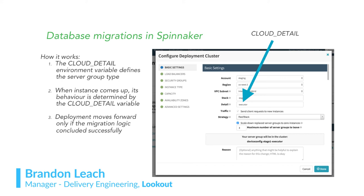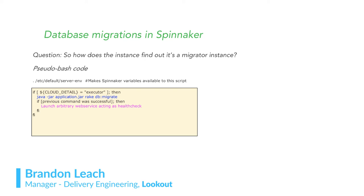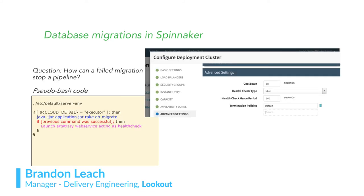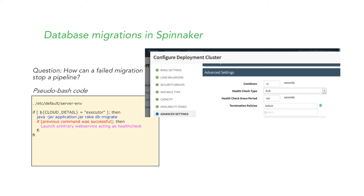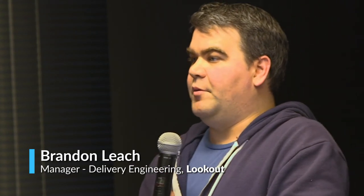The Cloud Detail environment variable defines a server group type. When an instance comes up, its behavior is determined by that variable. If Cloud Detail is 'executor,' it runs its migrations. We wrote a service called Candle that comes up if migrations are successful and passes the health check for the ELB, allowing the pipeline to proceed forward. If it doesn't succeed and times out, we assume the migrations have failed. All migration logs are sent into Splunk for our engineers.